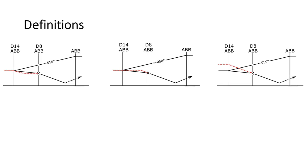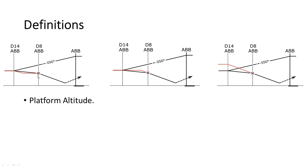First, some definitions. There are different ways to fly a VOR approach, and I want to discuss a couple of definitions I use which are not necessarily official. Because there are no official words for some of these concepts, I made up some words. The platform altitude is quite widely used in the industry, although it's not an official term. The platform altitude is basically the altitude after which you start the inbound descent.